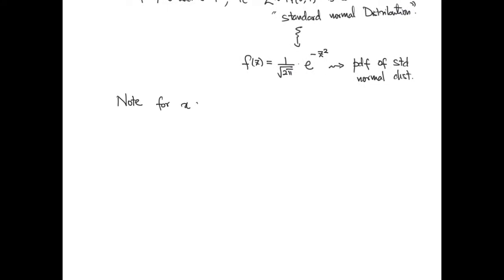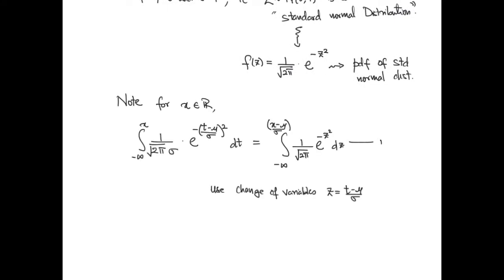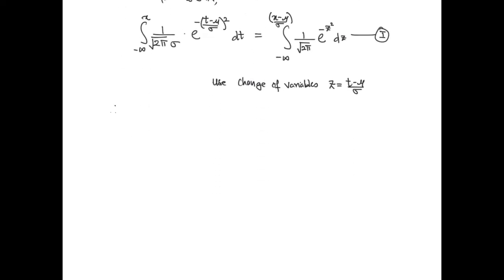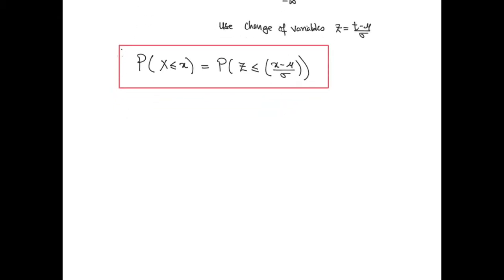There is an important transformation that relates the two integrals in this equality. It is a question of doing the change of variables, that is z equals (t minus mu) over sigma. We can use this fact to calculate probabilities with respect to the random variable X using the standard normal distribution. The relationship z equals (x minus mu) over sigma is often called the z-score of X, and we can similarly calculate the value of x given a z value, given by the formula x equals sigma times z plus mu.